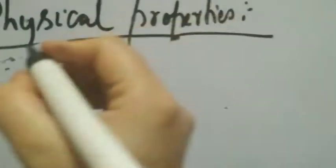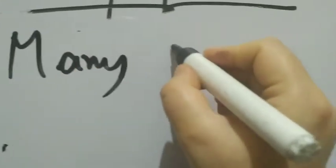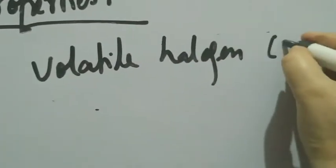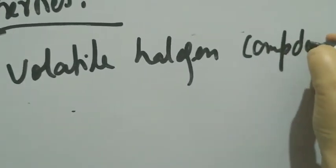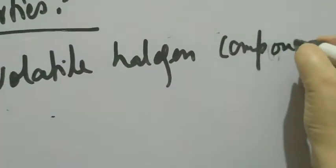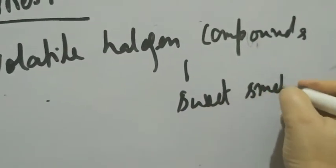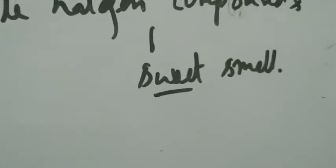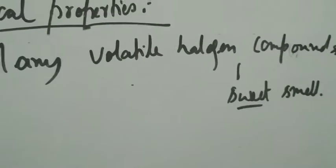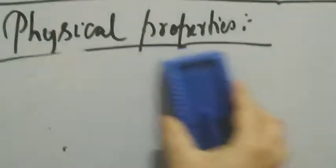Regarding odor, many volatile halogen compounds have a sweet smell — a kind of rosy, sweet smell. They show a smell only if they are volatile. So if the halogen compound is volatile, you can smell it, and it tends to have that sweet characteristic odor.